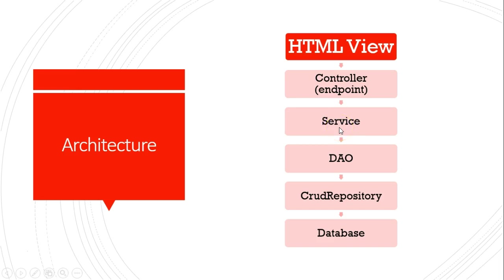Under that, we have the service layer, which sometimes when you're new to programming doesn't make a whole lot of sense what that service layer is for. But in this video, we'll see a good example of why we want the service layer. Underneath that, we'll have a data access object layer, a CRUD repository or an extension of that interface, and then a persistence mechanism, which may be a database.